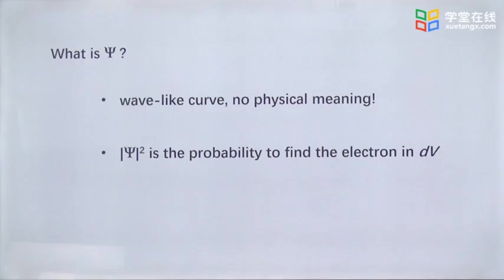The answer is that psi is just a function, no specific physical meaning. Till years later, it was accepted that the squared psi represents the probability to find the electron atom in a very small defined place, dv.